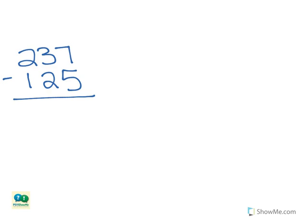Now we are going to expand each number by showing the value of each digit. We'll start with 237. Since the number 2 is in the hundreds place, its value is two hundreds, or 200.